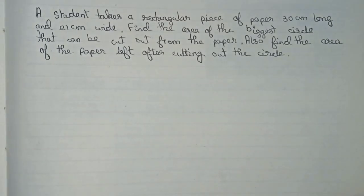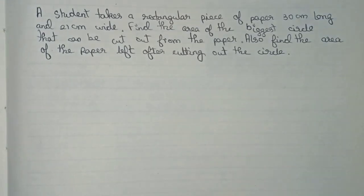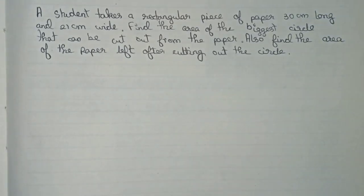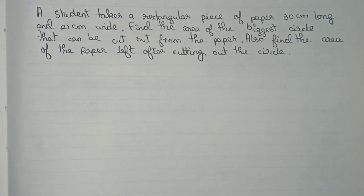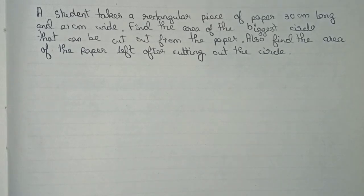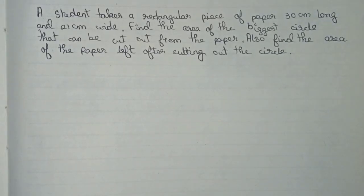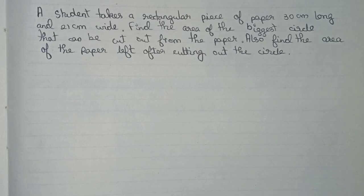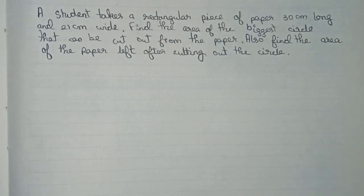Hello guys, welcome to this video. In this video, the question is: a student takes a rectangular piece of paper 30 centimeters long and 21 centimeters wide. Find the area of the biggest circle that can be cut out from the paper, and also find the area of the paper left out after cutting out the circle.